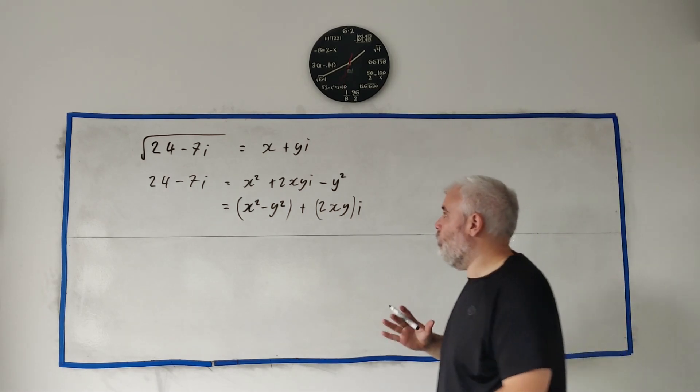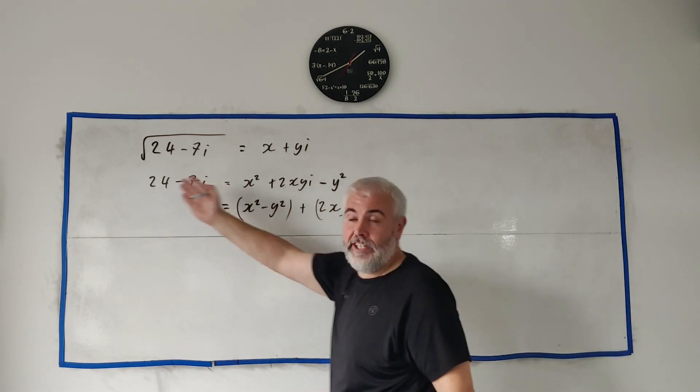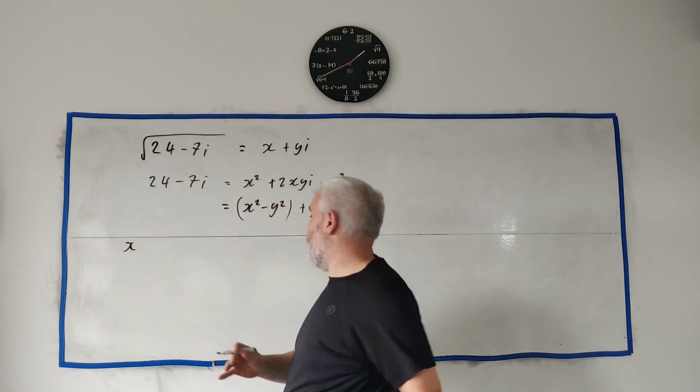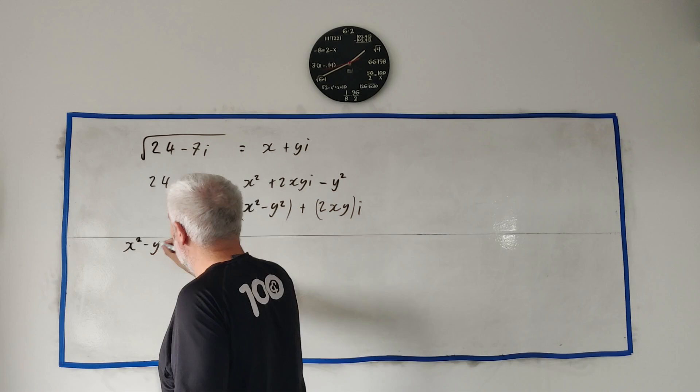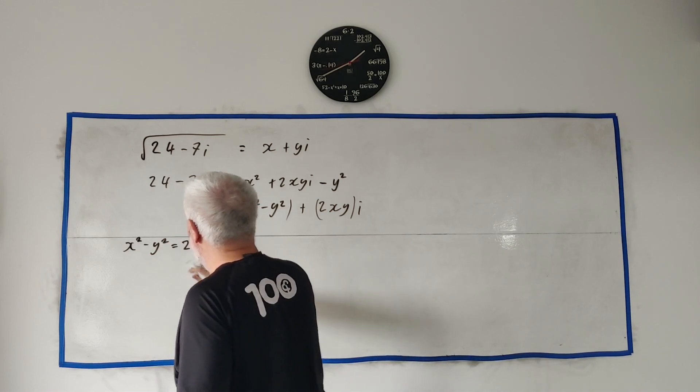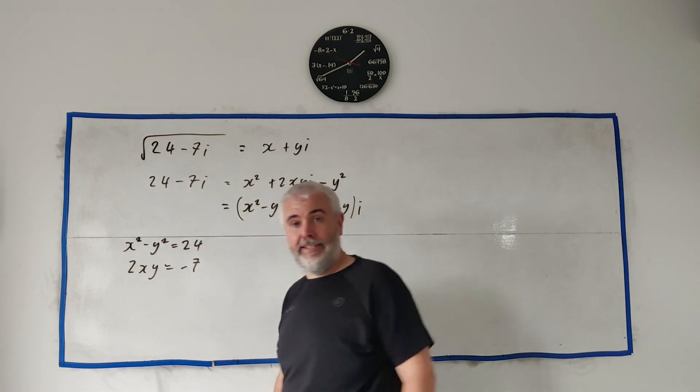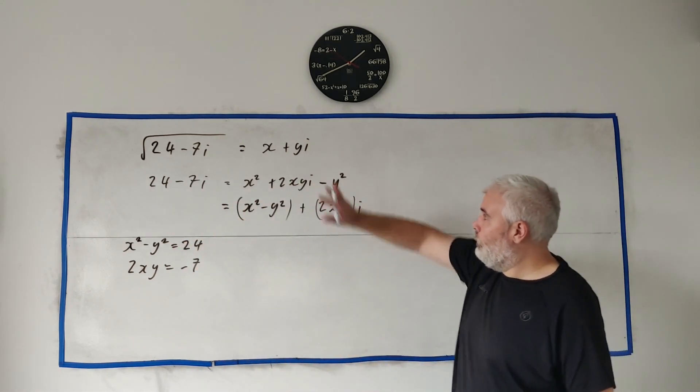Next we just need to remember that real always equals real, so we're left with this set of simultaneous equations: x squared minus y squared is equal to 24, and 2xy is equal to minus 7.